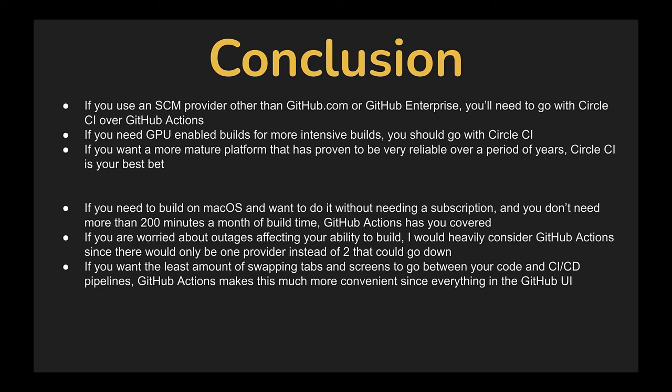If you need to build on macOS without paying for a subscription, GitHub Actions has you covered — as long as you don't use more than about 200 minutes a month of macOS build time. If you're worried about outages affecting your ability to build, GitHub Actions is favorable since you only have to worry about GitHub going down rather than GitHub or CircleCI — two different services versus one. If you want the least amount of context-switching between your code, CI/CD pipelines, and logs, GitHub Actions is more convenient since everything is right there in the GitHub UI.